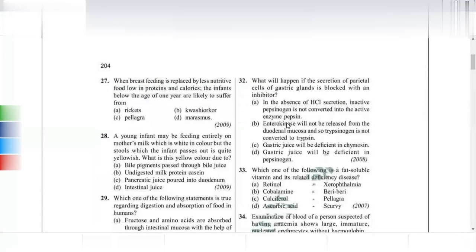When breastfeeding is replaced by food low in protein and calories in infants below one year, they are most likely to suffer from marasmus. If the child is above one year, the answer would be kwashiorkor. Mnemonic: K for kwashiorkor, K for kid; marasmus occurs in babies when mother's milk feeding is stopped.